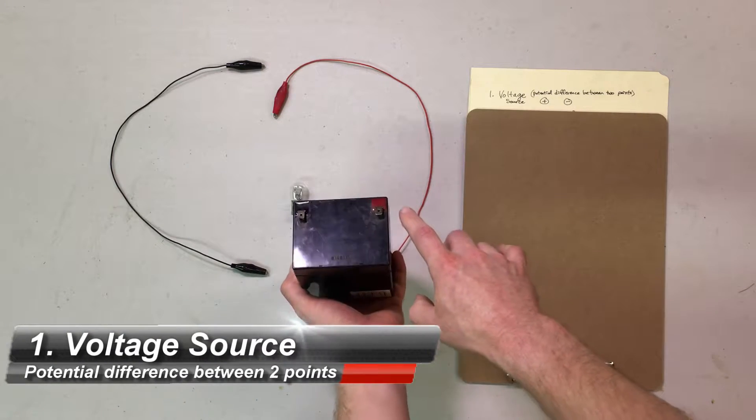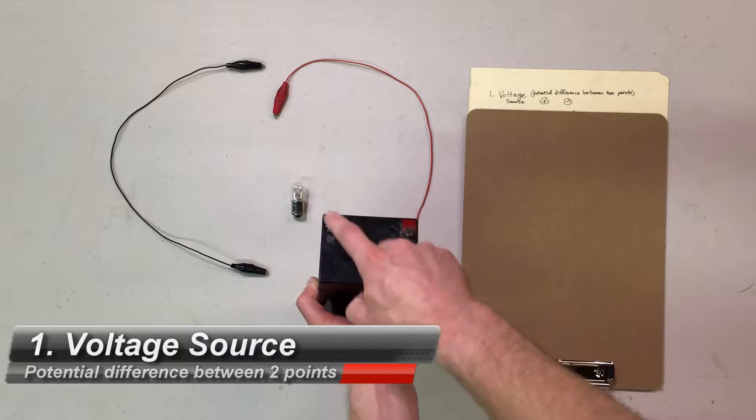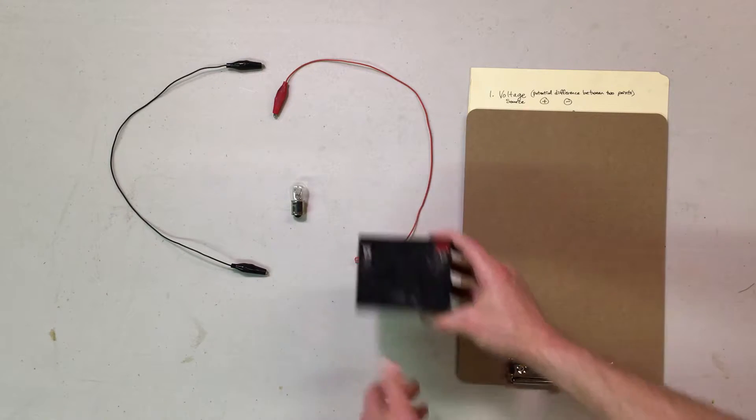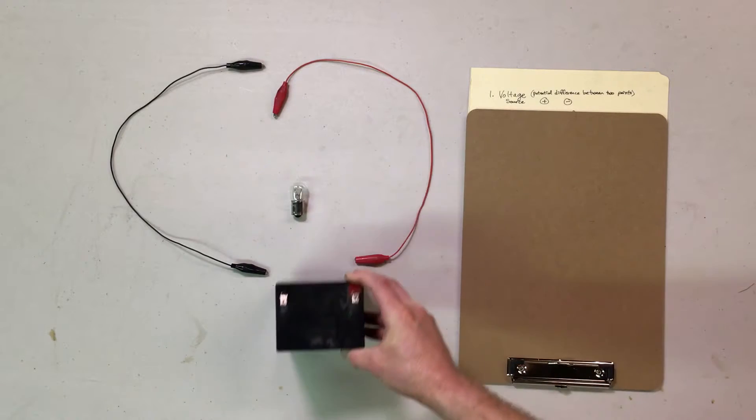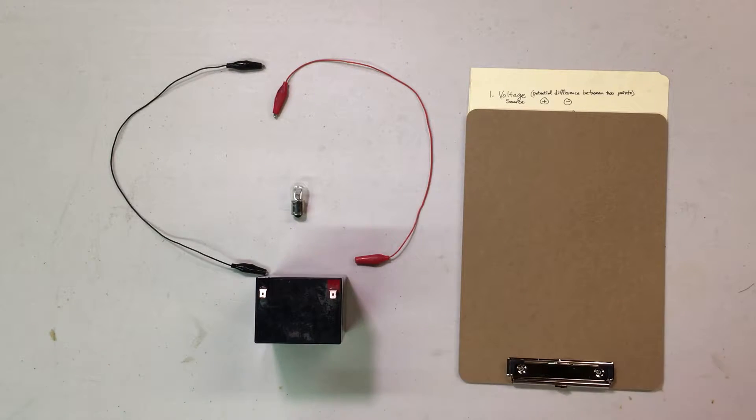Here's a 12-volt battery that has a positive terminal and a negative terminal. The difference, the voltage potential difference between the two points is roughly 12 volts. It should be slightly more with a charged 12-volt battery. But all you need is a voltage source, just something to provide power to the circuit.